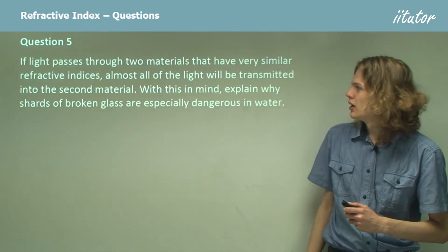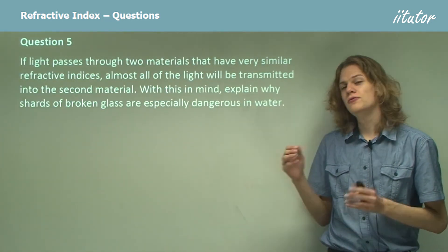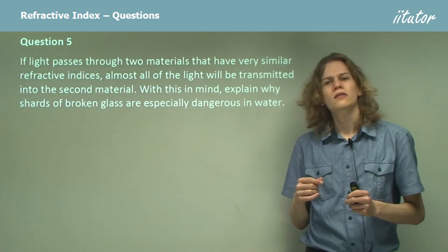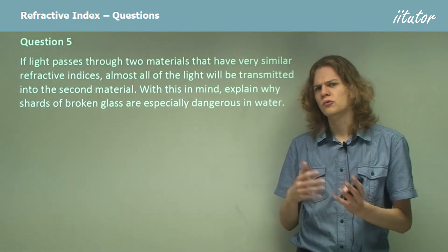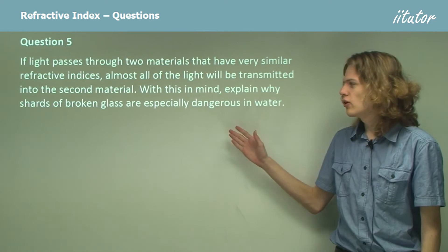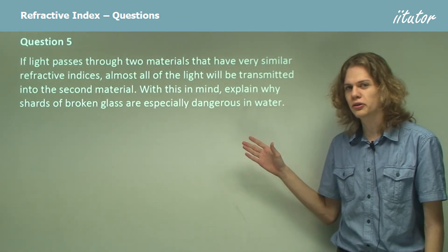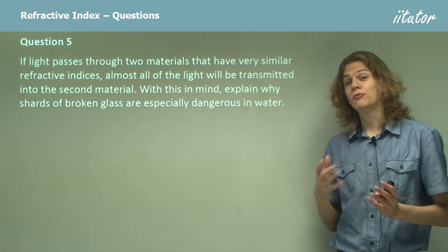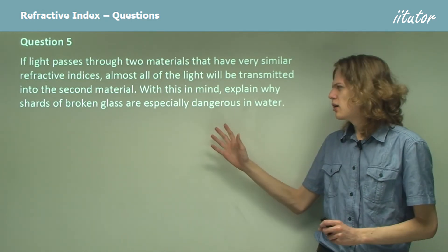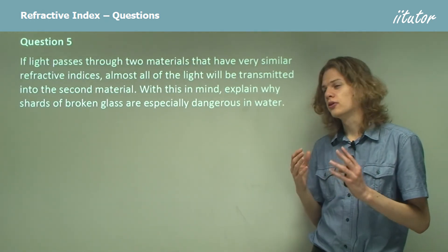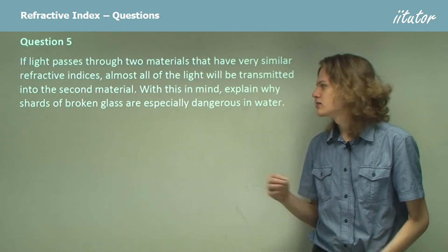Question 5. If light passes through two materials that have very similar refractive indices, that is, something like 1.3 and 1.4, almost all of the light will be transmitted into the second material. That is, we won't get very much reflection of the light. With this in mind, explain why shards of broken glass are especially dangerous in water.